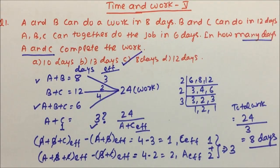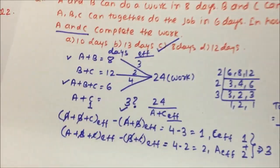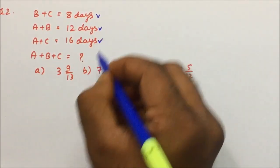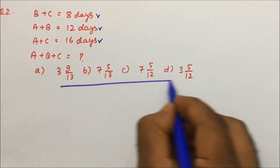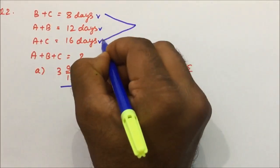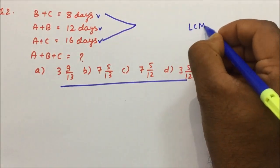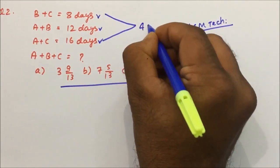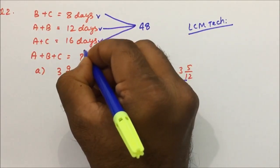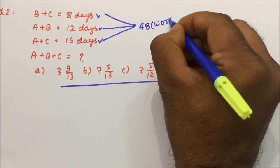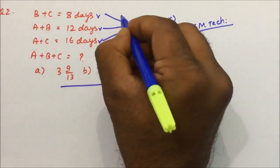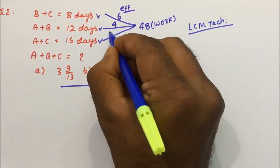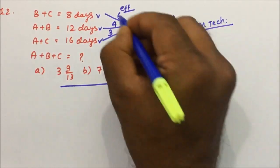This was a simple question solved easily by the LCM method. Now question number 2: B+C takes 8 days, A+B takes 12 days, A+C takes 16 days. In how many days will A+B+C complete the work? Again we use the LCM technique. Instead of taking LCM, we take 48, which is divisible by all three. So total work = 48. Efficiencies: 48 ÷ 8 = 6, 48 ÷ 12 = 4, 48 ÷ 16 = 3.